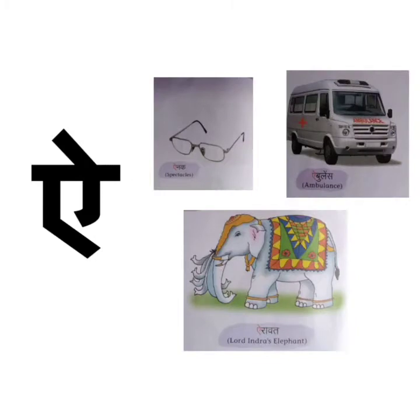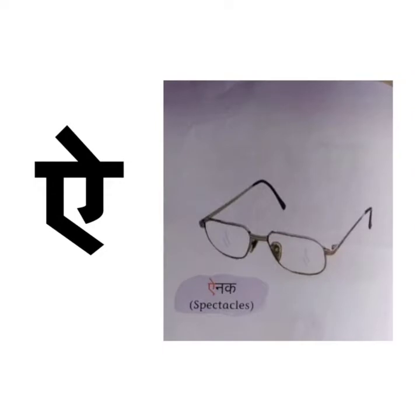Ay, ay say ay nak. Ay nak means spectacles — you can also say specs. Specs are used to correct faulty vision or protect the eyes.